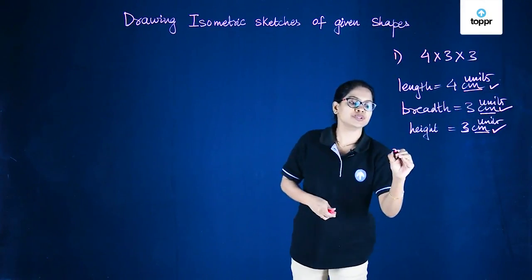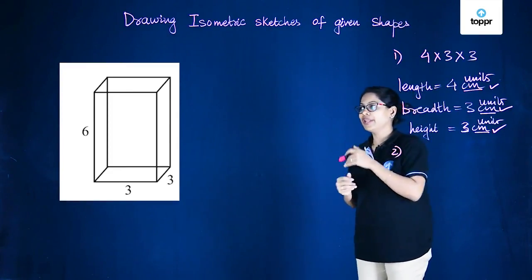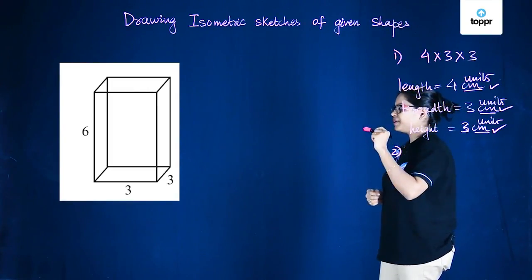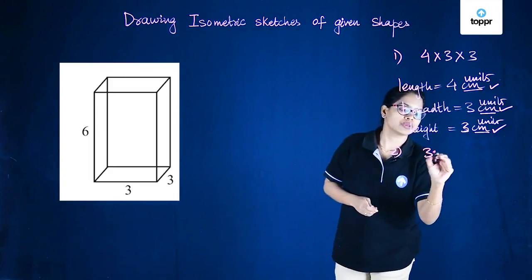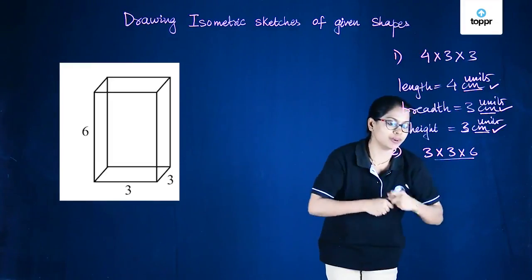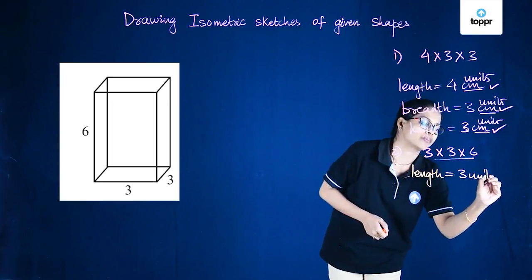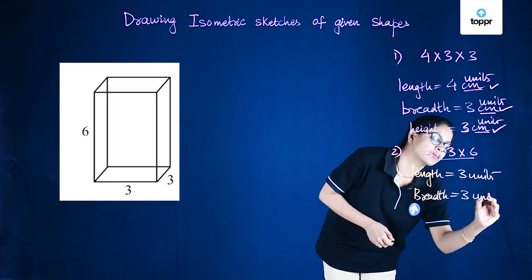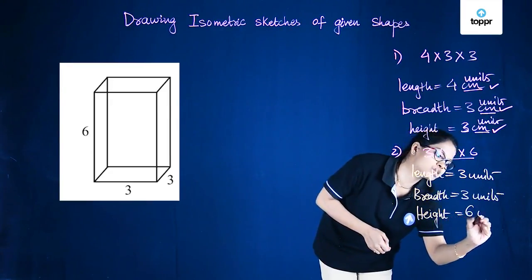In the next question, here we have an oblique sketch of a cuboid and we have to draw an isometric sketch of this cuboid. Now if we look at the dimensions of this cuboid, the height here is equal to 6, length and breadth are 3 and 3. So the length of this cuboid is equal to 3 units, breadth is equal to 3 units and height is equal to 6 units.